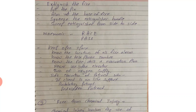To summarize: Rescue, Alarm, Confine, and Extinguish the fire — RACE. For the extinguisher — PASS: Pull the pin, Aim at the base of fire, Squeeze the extinguisher handle, and Sweep from side to side.